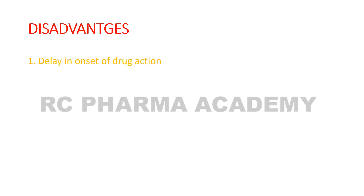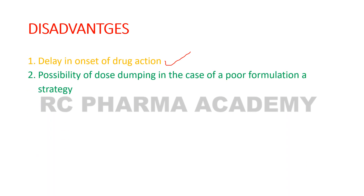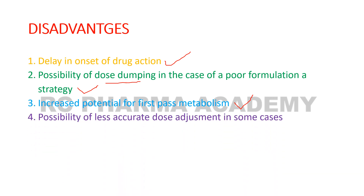Disadvantages include: delayed onset of action — unlike conventional dosage forms, immediate action is not possible with controlled release. There is also the possibility of dose dumping, increased potential for first-pass metabolism, and the possibility of less accurate dosing in some cases.